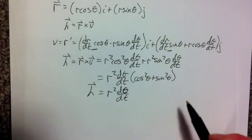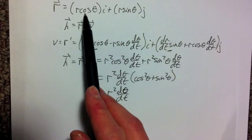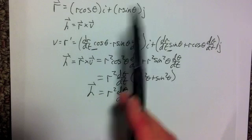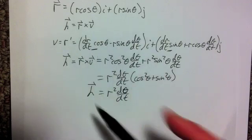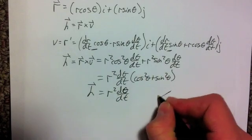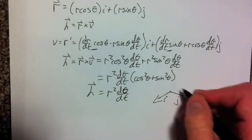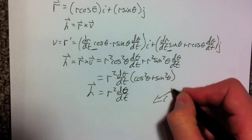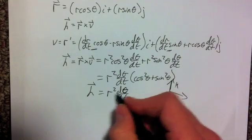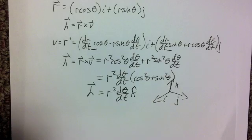As we had earlier, the two directions we were dealing with were the i-hat and j-hat direction, and when those two are crossed, the cross product of i-hat and j-hat gives the k-hat direction, so this h vector is therefore in the k-hat direction.